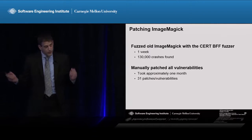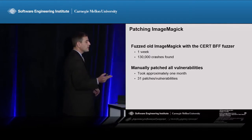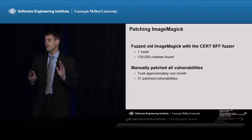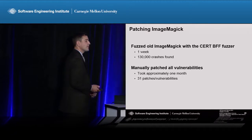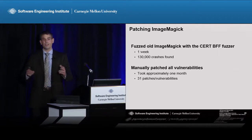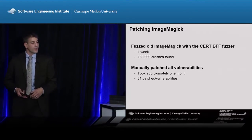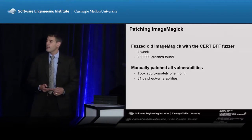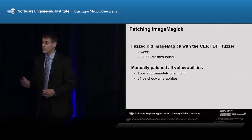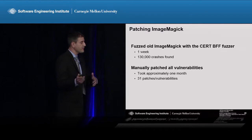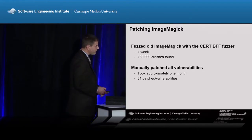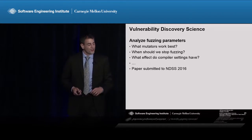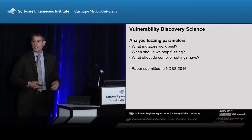Now, the patches we use on a daily basis for security updates aren't actually what we want, because things like Windows updates tend to fix hundreds of different bugs at the same time. What we want are patches that fix one vulnerability at a time, so we basically have to find and create our own patches. We took an older program called ImageMagick, which parses different image formats, and we fuzzed it using CERT's fuzzer BFF for a week, finding over a hundred thousand crashes. Then we sat down and fixed all the vulnerabilities — there were thirty-one vulnerabilities, it took about a month, and it was not a very fun process. But now we have this ground truth data, and we can start answering questions about how we should actually be doing fuzzing.